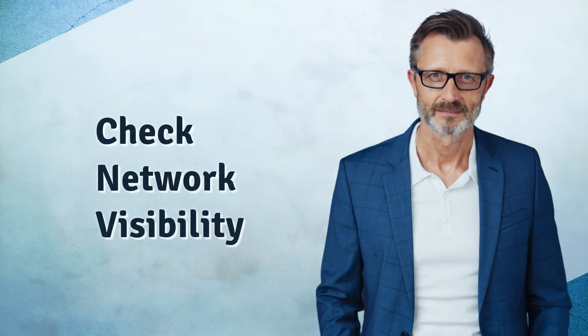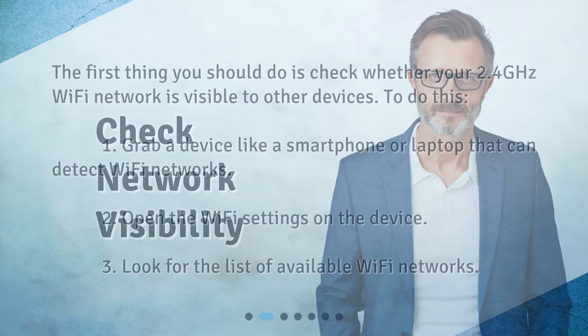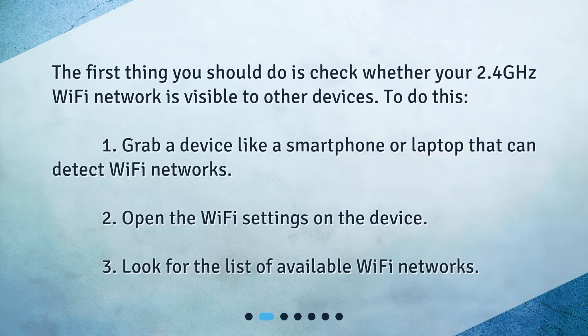Check network visibility. The first thing you should do is check whether your 2.4 GHz Wi-Fi network is visible to other devices. To do this: 1. Grab a device like a smartphone or laptop that can detect Wi-Fi networks. 2. Open the Wi-Fi settings on the device. 3. Look for the list of available Wi-Fi networks.